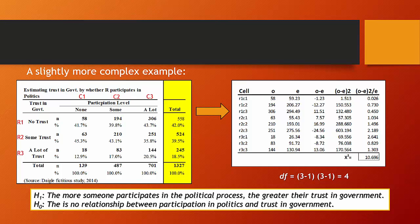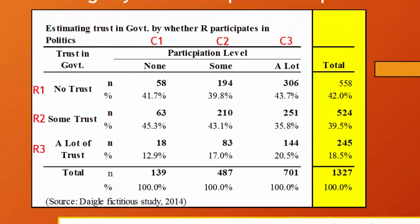Let's make it something we might actually study in political science. Going back to our original table estimating trust in government by whether R participates in politics, the totals column shows the proportions we would expect to carry across all categories of the independent variable. For example, we expect 42% in the no trust category regardless of whether people participate none, some, or a lot, and 39.5% to carry across the some trust category.